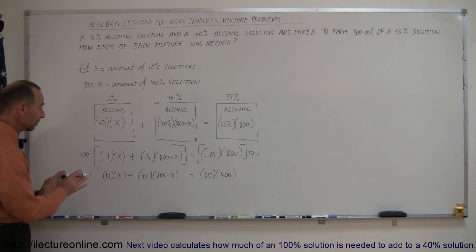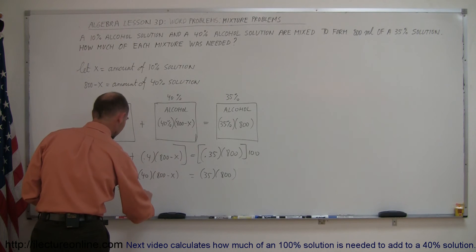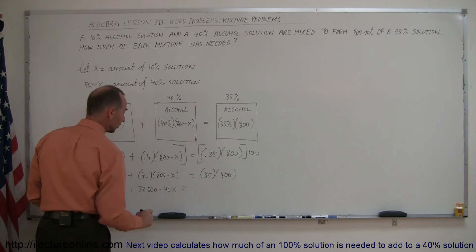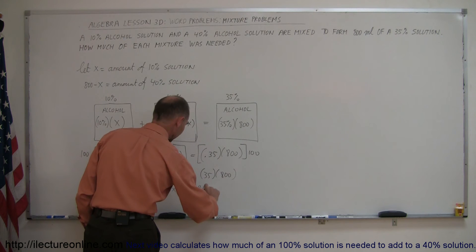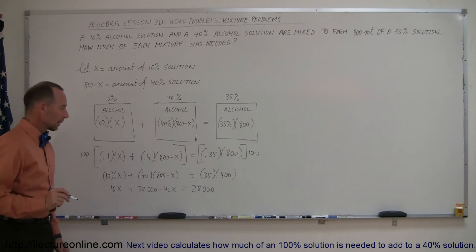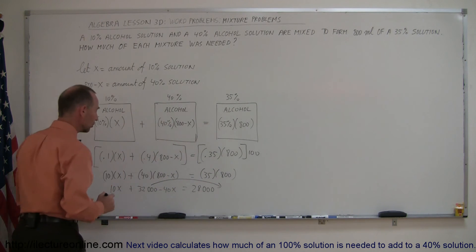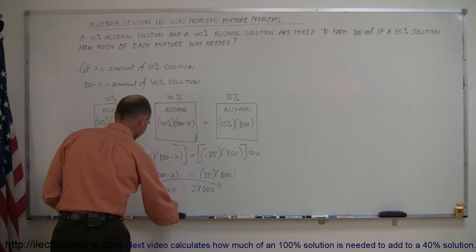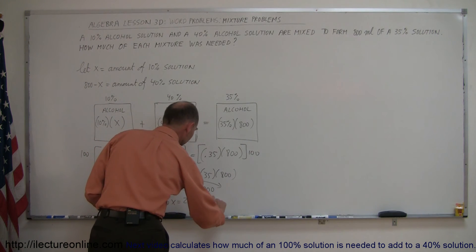Multiply everything out to get rid of the parentheses. That gives 10x + 40 times 800, which is 32,000, minus 40x equals 35 times 800, which is 28,000. Next, move all x terms to the left — they're already there — and move all numbers to the right. So we get 10x − 40x = 28,000 − 32,000.